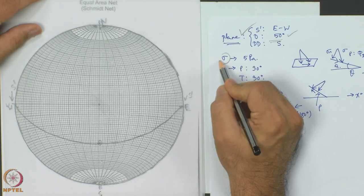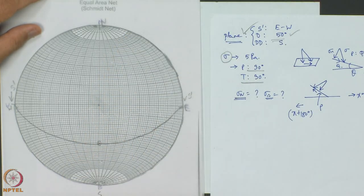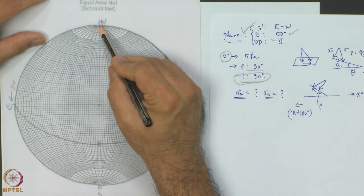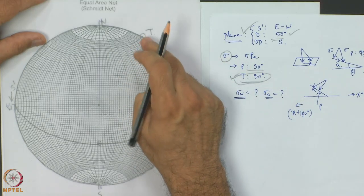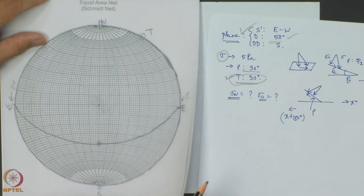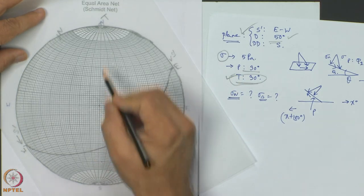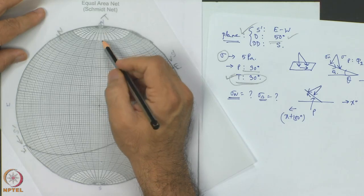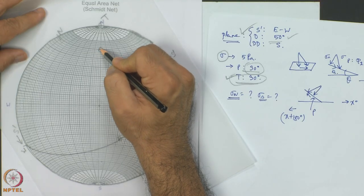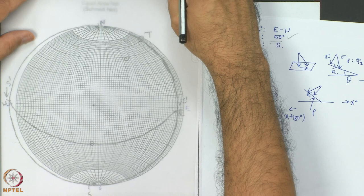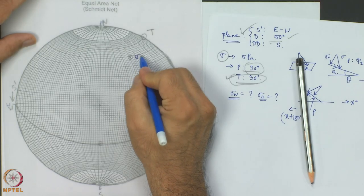Now I want to plot the line of action of stress sigma. The plunge is 30 and the trend is 30 degrees. In this position, locate the trend from north clockwise: 10, 20, and 30. This is the trend T — it has been plotted. Bring the T point to the north point of the stereonet by rotating the tracing sheet, ensuring the centre is matched. From there, move inside an amount equal to the plunge: 10, 20, and 30. Mark it, then move the tracing sheet back. This point represents the line of action of stress sigma.